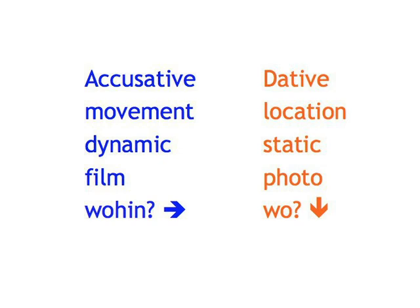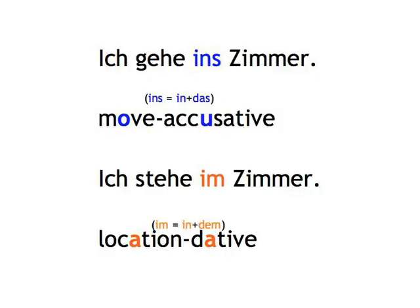The dative indicates location. It's static. You can capture it in a photo. It answers the question Wo? Where? That's why I said before, Ich gehe ins Zimmer — I'm going into the room, moving with the accusative. Ich stehe im Zimmer — I'm standing in the room. Location, location, location — dative.